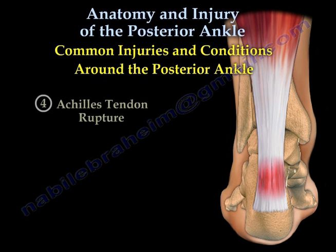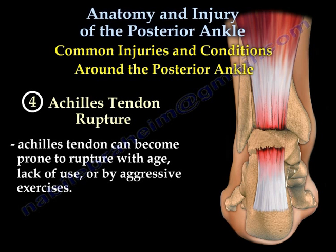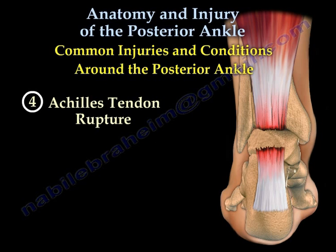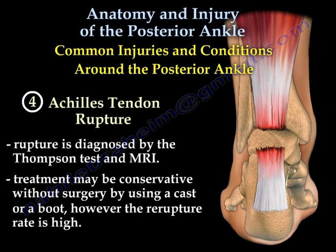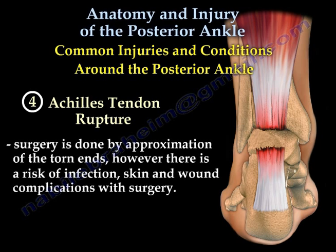The last condition is Achilles tendon rupture. The Achilles tendon can become prone to rupture with age, lack of use, or by aggressive exercise. It is diagnosed by the Thompson test and MRI. Treatment may be conservative without surgery using a cast or boot; however, the re-rupture rate is high. Surgery is done by approximation of the torn ends; however, there is a risk of infection, skin, and wound complications.